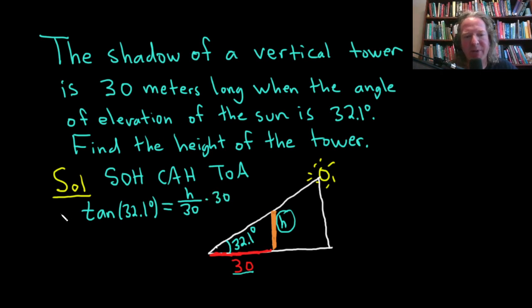We can multiply both sides by 30. These cancel. So we get h is equal to 30 times the tangent of 32.1 degrees.